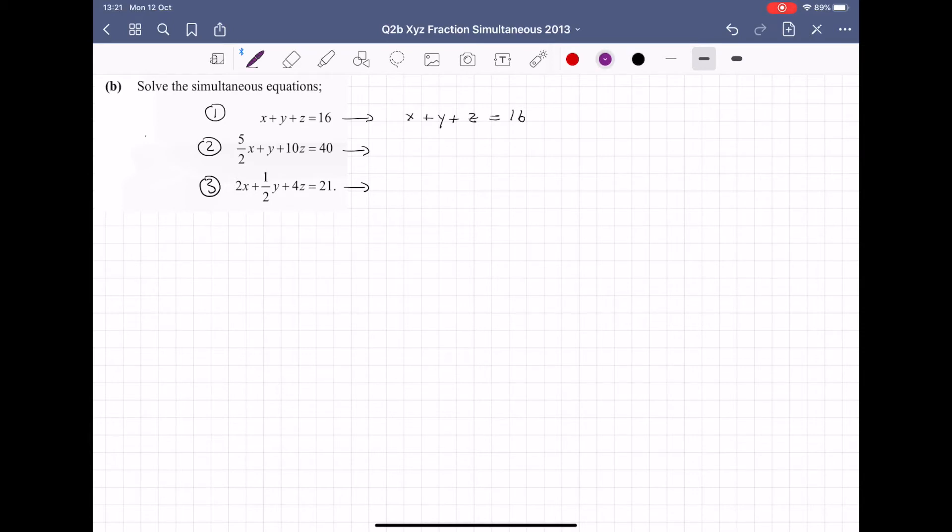The second one, I'm going to multiply it by 2, the number on the bottom, because that will cancel the fractions. And the third one, I'm also going to multiply it by 2 to get rid of the fractions. So note, I'm not doing anything to solve the simultaneous equations here. I'm just rewriting the equations without fractions. And it's perfectly okay to do this as long as you do it to the whole equation.